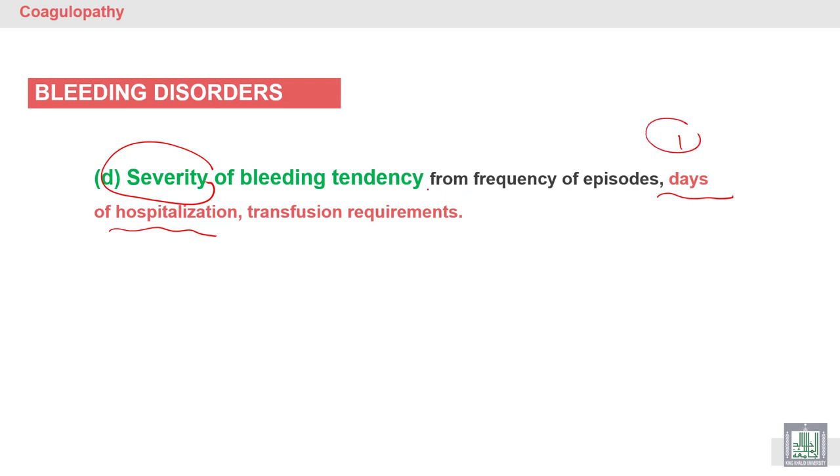Also, the frequency of episodes, recurrence of the disease or the bleeding, and the transfusion required.